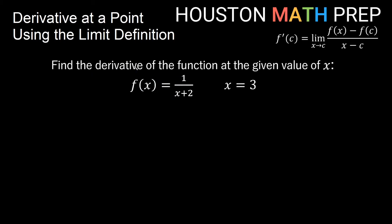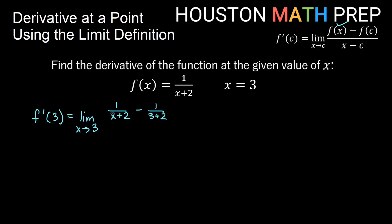Let's look at one more example with a rational function. We're going to find the derivative of f(x) = 1/(x + 2) at x = 3, so c = 3. Then f prime of 3 equals the limit as x approaches 3 of [f(x) minus f(c)] over (x minus 3), which becomes (1/(x+2) minus 1/5) all over (x minus 3).